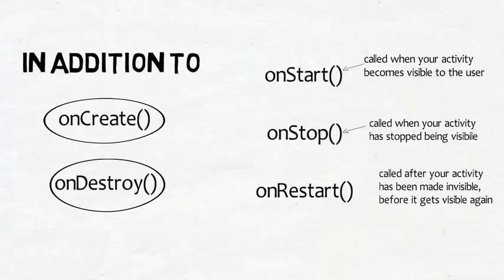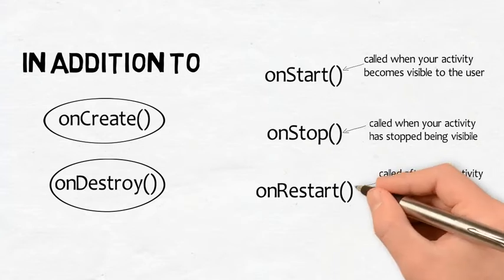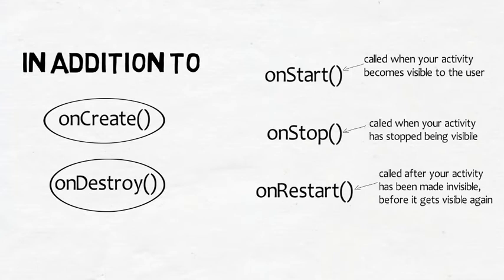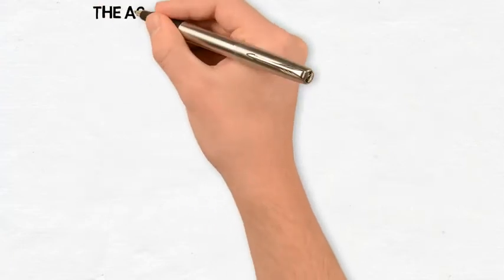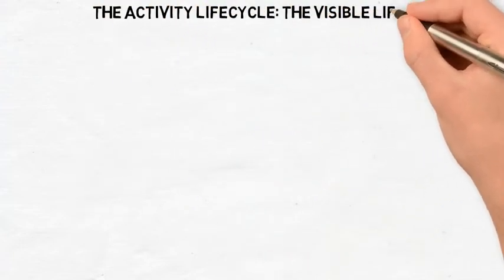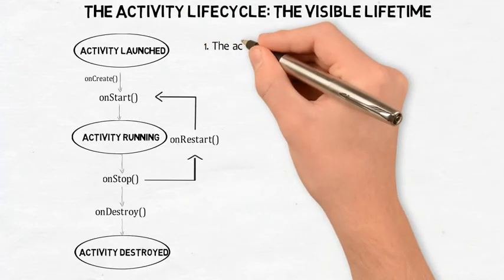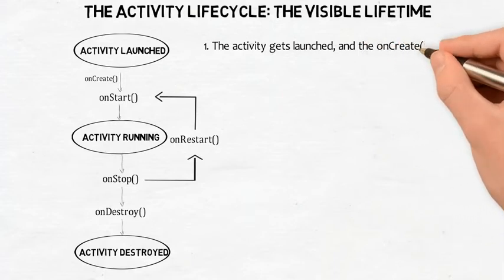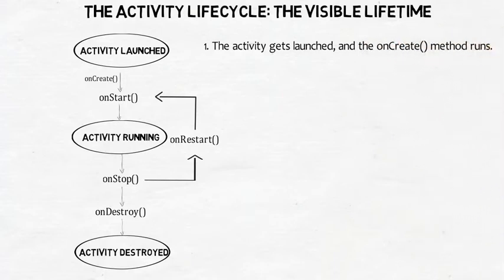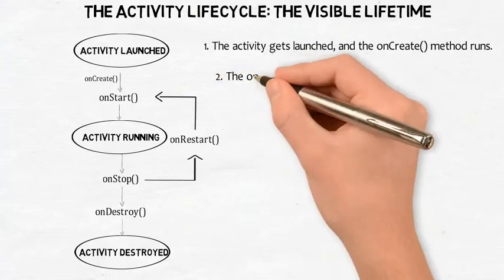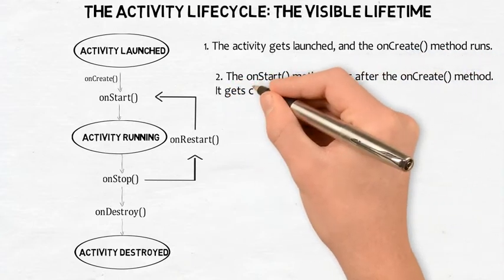onRestart gets called after your activity has been made invisible, before it gets made visible again. Let's take a closer look at how these fit in with the onCreate and onDestroy methods — the activity lifecycle, the visible lifetime. The activity gets launched and the onCreate method runs. Any activity initialization code in the onCreate method runs. At this point, the activity isn't yet visible as no call to onStart has been made. The onStart method runs after the onCreate method, and gets called when the activity is about to become visible.